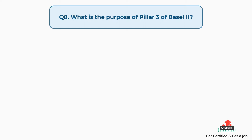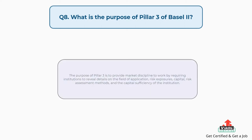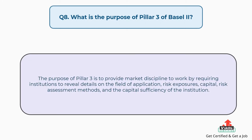Question number eight: what is the purpose of pillar three of Basel II? The purpose of pillar three is to provide market discipline by requiring institutions to reveal details on the field of application, risk exposures, capital, risk assessment methods, and the capital sufficiency of the institution.